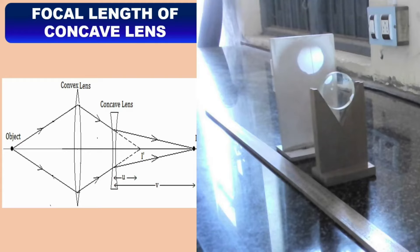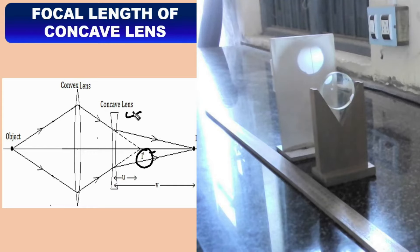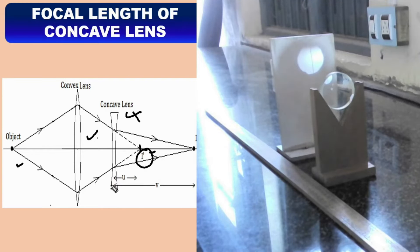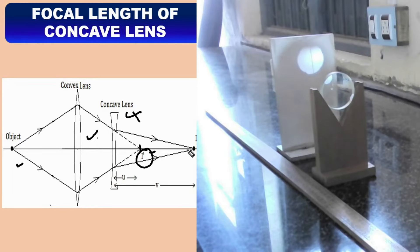Using the convex lens, we will create a virtual object. The position I-dash is formed when the concave lens is not present — only the convex lens is present. So this position I-dash will form the image. In other words, for the concave lens the object is virtual. The object distance is I-dash in the concave lens. Hence, due to the diverging ability of the concave lens, the light which was earlier focusing at I-dash is now diverging and focuses at a new position.